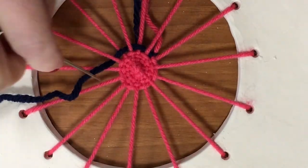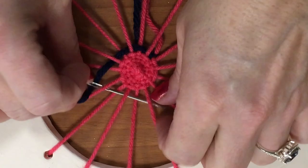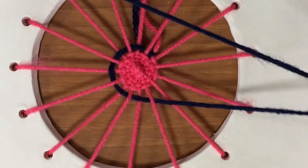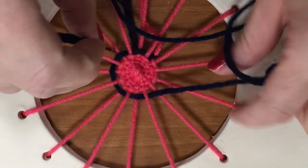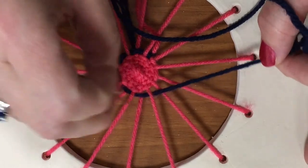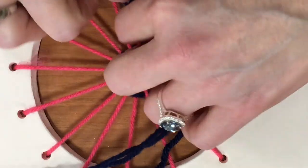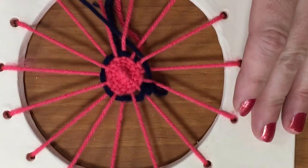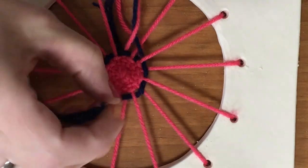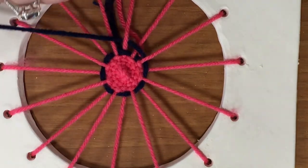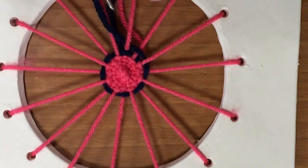And I'm going to keep going. Making sure that my yarn is staying nice and tight. And again, if you've done this correctly, your weft string should be opposite every time.